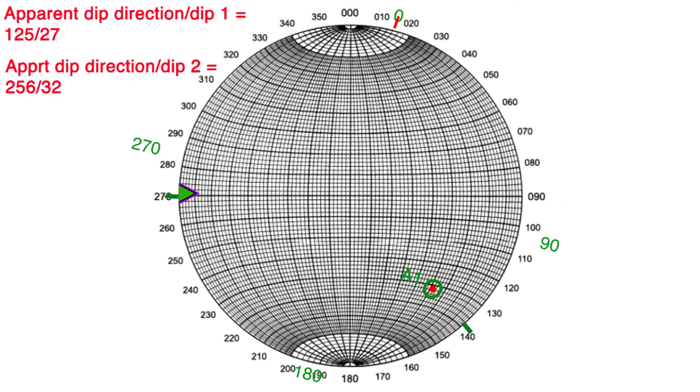Rotate the overlay until both of those points lay on one of the great circle lines, and then draw in that great circle. Rotate back to proper orientation, and there is your true plane orientation, striking 102, dipping at 54 degrees.